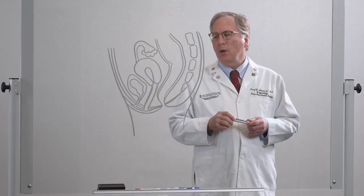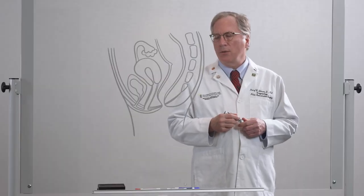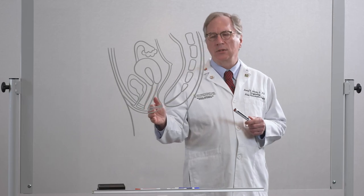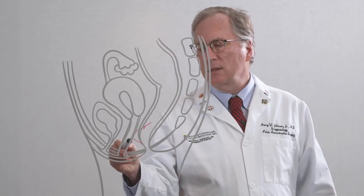When you have pelvic organ prolapse, one of these organs may fall through the pelvic floor or actually pass out through the vagina. If it's the rectum which bulges in, it's called rectocele.